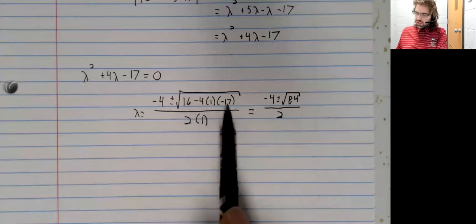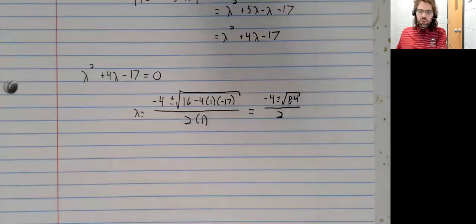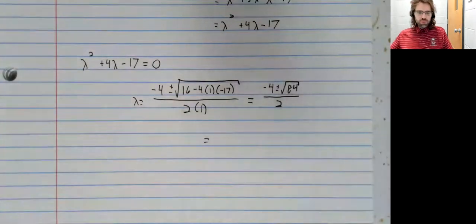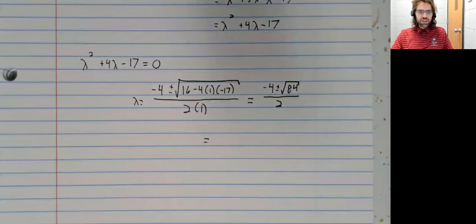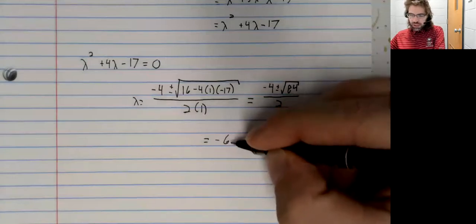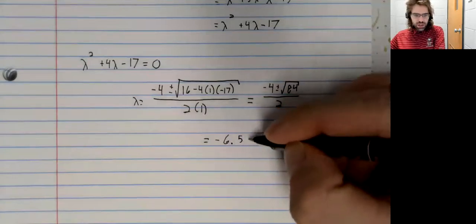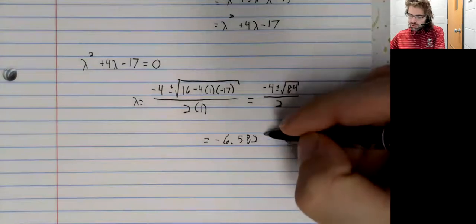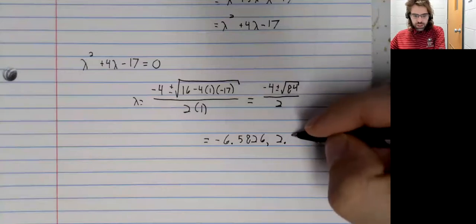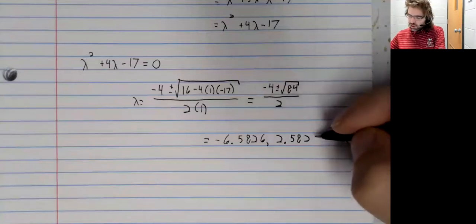And if we plug this into our calculator, this is 84. If we wanted a decimal approximation of our eigenvalues, we could get that too. Again, just looking at a calculator. Negative 6.5826 and positive 2.5826.